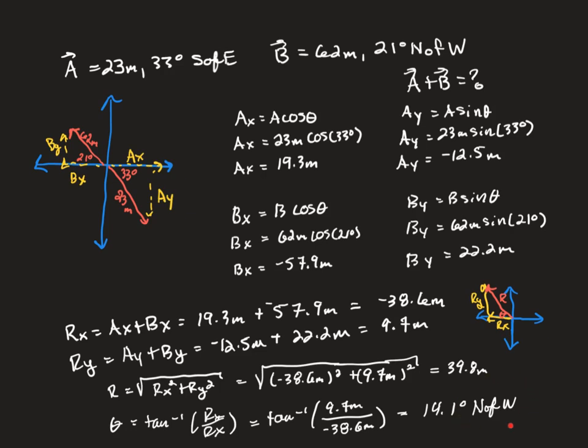And remember, you always want to put some indication of what axis your angle is measured from. So, since my x is along the west axis, I put west here, and because the y points north, I put north here. So we're 14.1 degrees north of west, or you can say 14.1 degrees above the negative x-axis.